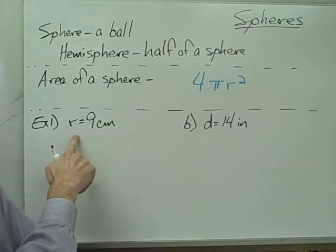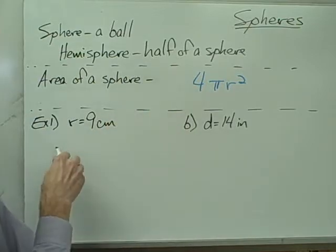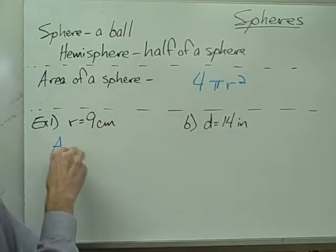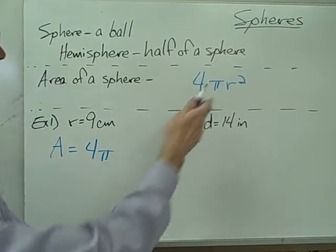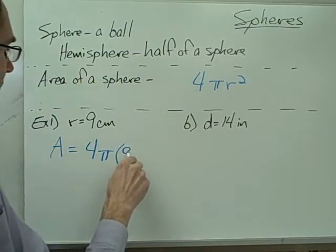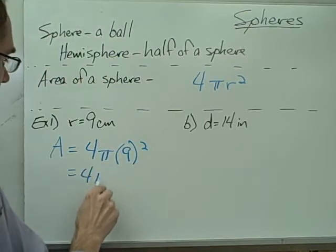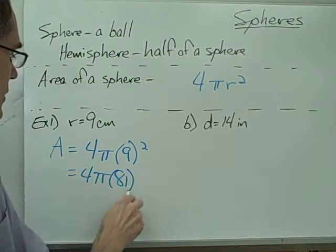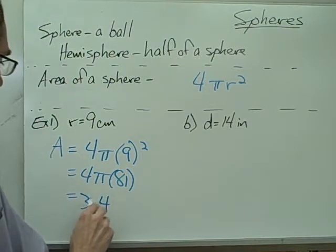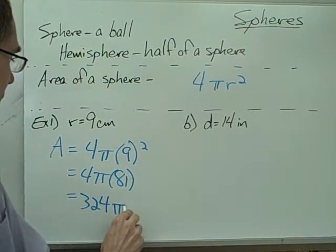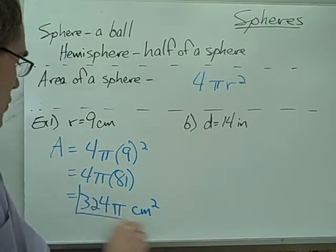Example 1a: I have a sphere with a radius of 9 centimeters. I have my area formula, so I just plug that in: 4 pi, my radius is 9, so that's 4 pi times 9 squared, 4 pi times 81, and that gives me 324 pi. My units are centimeters squared.